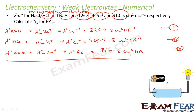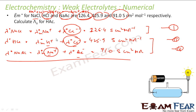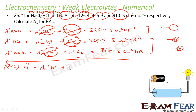Now if we add equations 2 and 3 and then subtract equation 1, what happens is we get λM⁰ of H⁺, Cl⁻, Na⁺, Ac⁻ — and then we subtract Cl⁻ and Na⁺. Those cancel out, so what we get is λM⁰ of H⁺ plus λM⁰ of Ac⁻, and that value is 425.9 plus 91.0 minus 126.4.